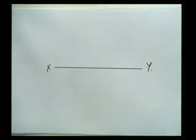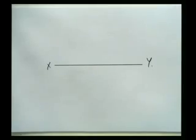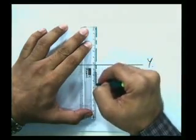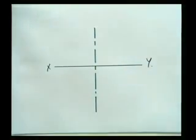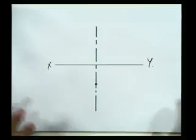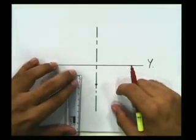After drawing the XY line, I'll draw the pentagon first. The exterior angle of a pentagon is 360 divided by 5, which is 72 degrees, so each exterior angle is 72 degrees. I'll draw the center line first, then take a point and draw the pentagon with side 30mm.